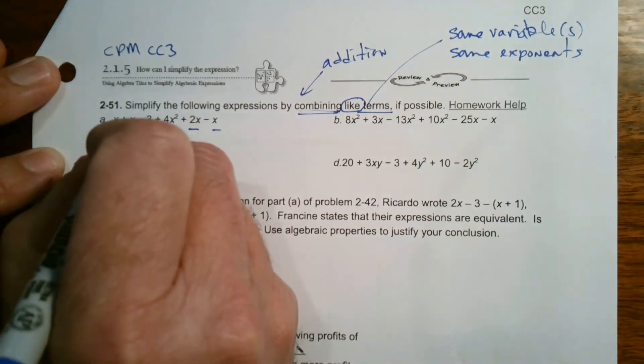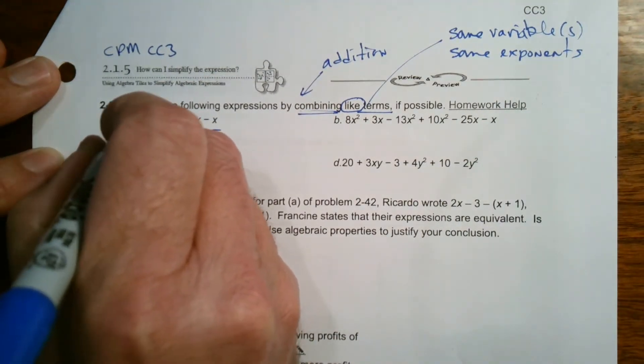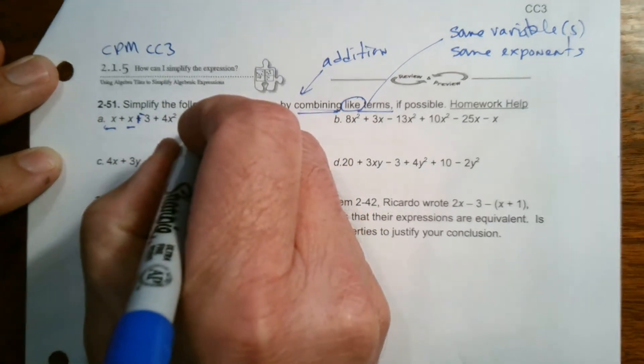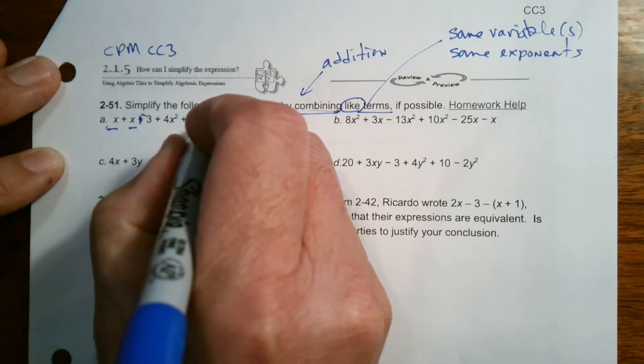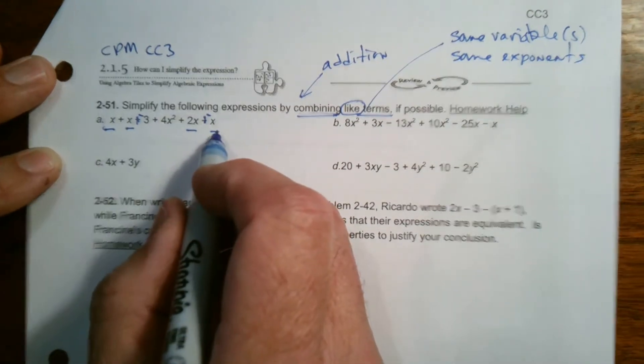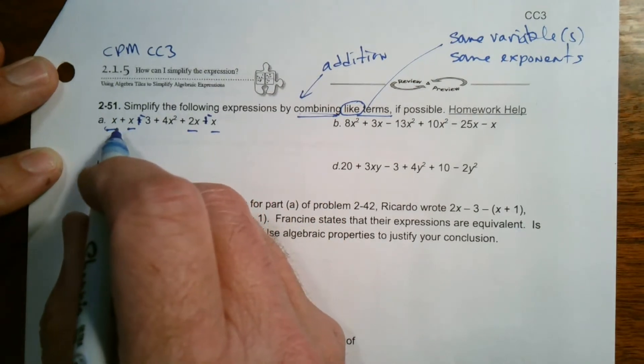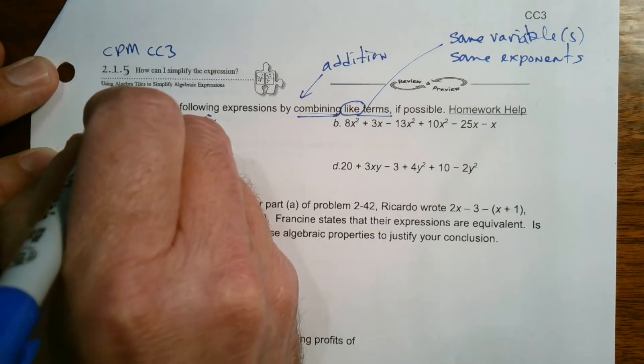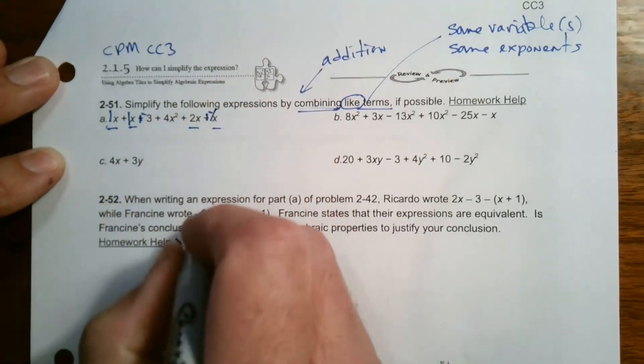So I'm going to take where there's subtraction and I'm going to add the opposite. So I can see that the term after it is a negative is what I'm dealing with. So minus means add the opposite. And then each of these X's, there's no number in front, but keep in mind, whenever there's no number in front, there's always that one, it's one X, one X, and this gives a negative one X.